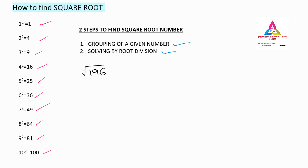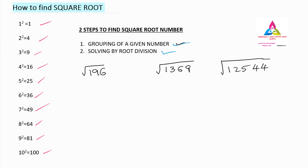I will take a simple example first, then we can go for a more difficult one. If we want to find the root of 196, I will also take a second example, which is 1369, and one more example, which is root of 12544. So these are the three examples I have taken. First we will move on to the root of 196.